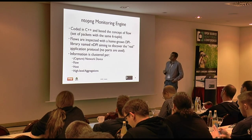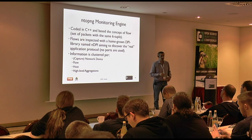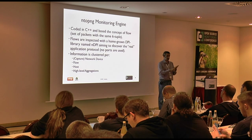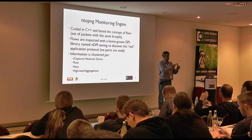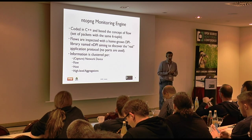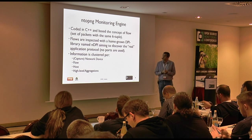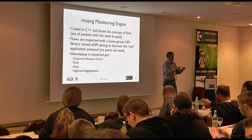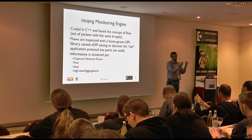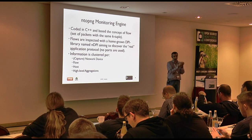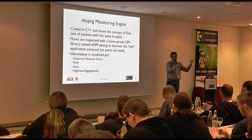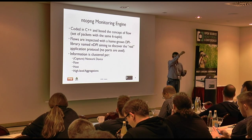Each flow is a set of packets with the same six-tuple: IP source, IP destination, port source, port destination, protocol, and VLAN if you have it. Whenever we receive a packet, it is classified into a flow — the flow is the main unit. Each flow will have a source host, a destination host, and of course a network interface.